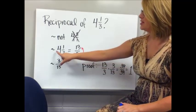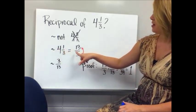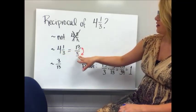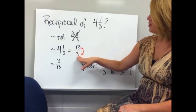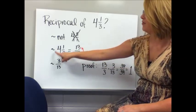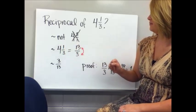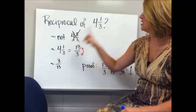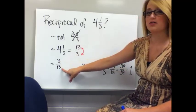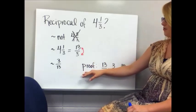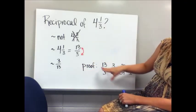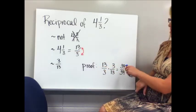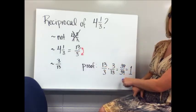What you need to do is convert the mixed number to an improper fraction first. 4 and 1 third equals 13 over 3, because 3 times 4 is 12, plus 1 is 13. Then to find the reciprocal, flip it over — so the reciprocal of 4 and 1 third is 3 over 13. We can prove this: 13 over 3 times 3 over 13 gives 39 over 39, which equals 1.